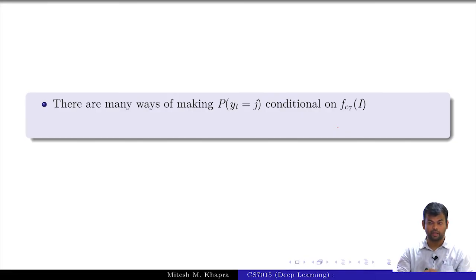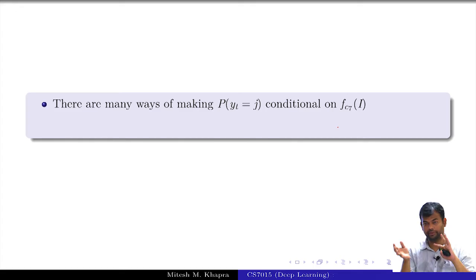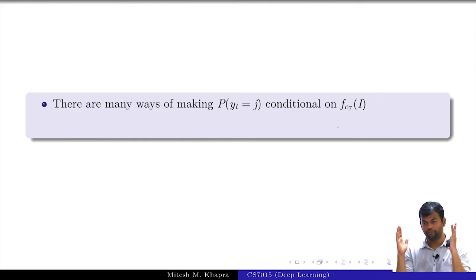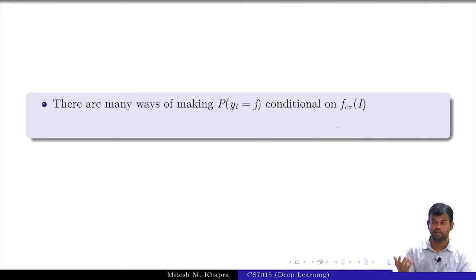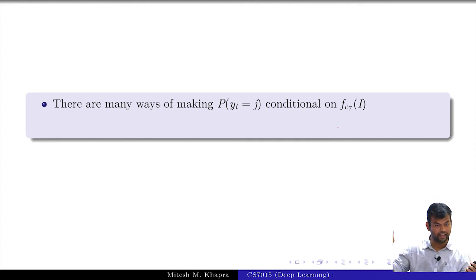There is also a go symbol — a special word in your vocabulary that says 'start generating the sentence'. You also add a stop symbol, so whenever the model generates stop it stops generating. X_0 is the go symbol. Now since S_1 depends on S_0, and S_0 encodes the image, all subsequent time steps will depend on the image. The second option is to feed the image representation at every time step alongside the current input.